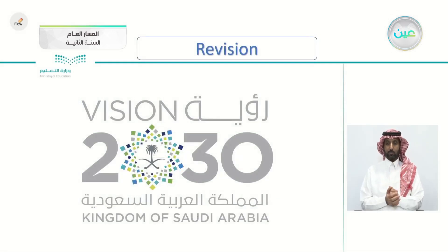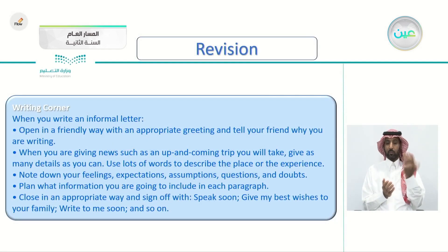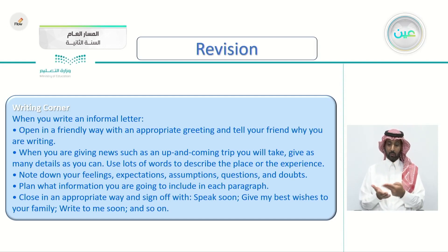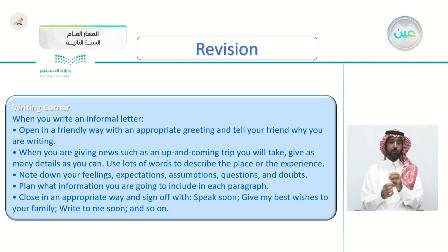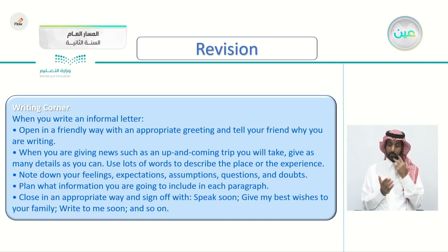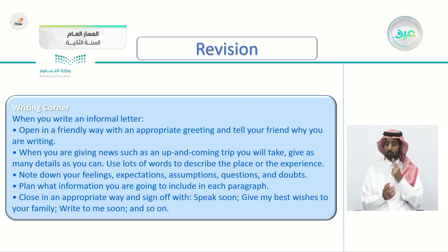Let's begin by revising our previous lesson. We took an article about the vision of Saudi Arabia in 2030, then we moved to the writing corner. When you write an informal letter, open in a friendly way with an appropriate greeting and tell your friend why you are writing. Give as many details as you can, note down your feelings and expectations, assumptions, questions and doubts. Plan what information you're going to include in each paragraph. Close in an appropriate way and sign off with something like 'speak to you soon' or 'give my best wishes to your family.'